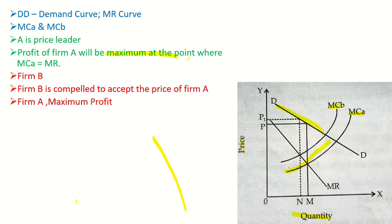The profit of a firm is maximum at the point where MC equals MR. MC-A cuts the MR curve at a certain point — this is the equilibrium point of firm A where profit is maximum. Regarding firm B, MC-B cuts the MR curve at a different point, and this is the equilibrium point of firm B.